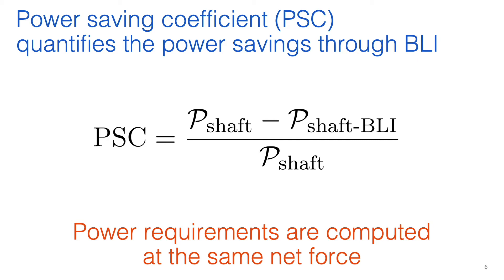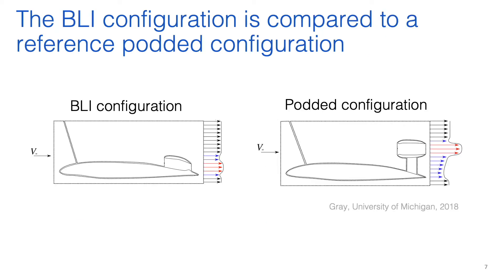In this work, we use the metric power saving coefficient, or PSC, to compute the benefit of BLI. With this approach, we compare the shaft power requirement of a BLI configuration to a reference podded configuration operated at the same net force on the whole body. We do this because it is difficult to compute thrust and drag for a configuration that uses BLI. The net force approach sidesteps this challenge, and we can compare the propulsive performance directly between a BLI and a podded configuration.